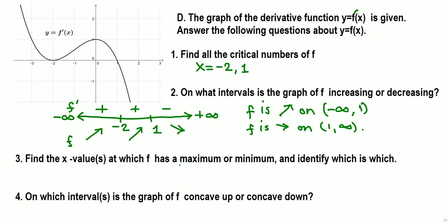Next, find the x value at which f has a local maximum or minimum. At x equals negative 2, f prime is positive on both sides, so the function is increasing through that point — no local max or min there. At x equals 1, the function goes up then down, so we have the top of the hill: a local maximum at x equals 1, and no local minimum.